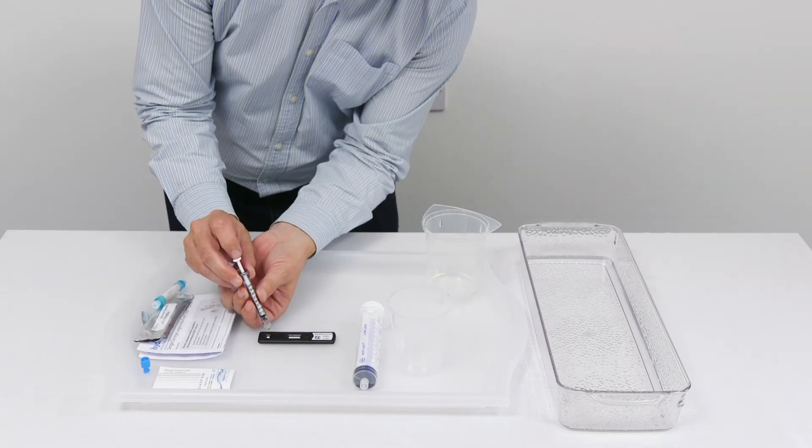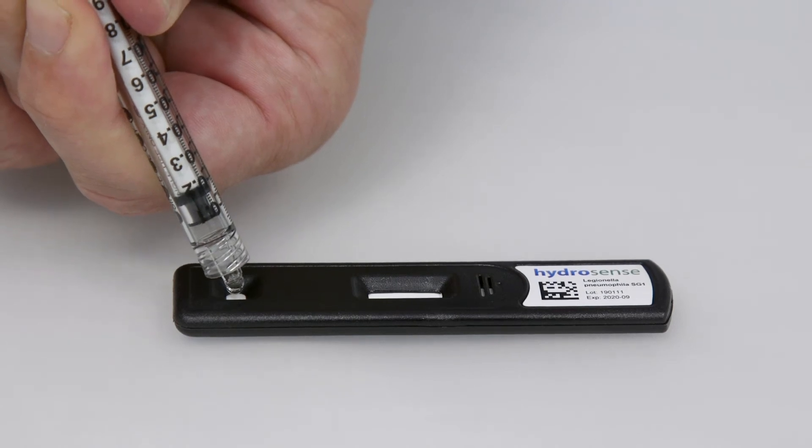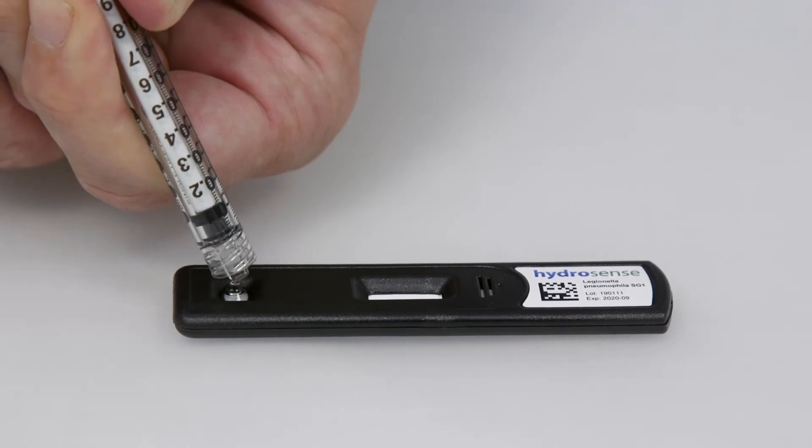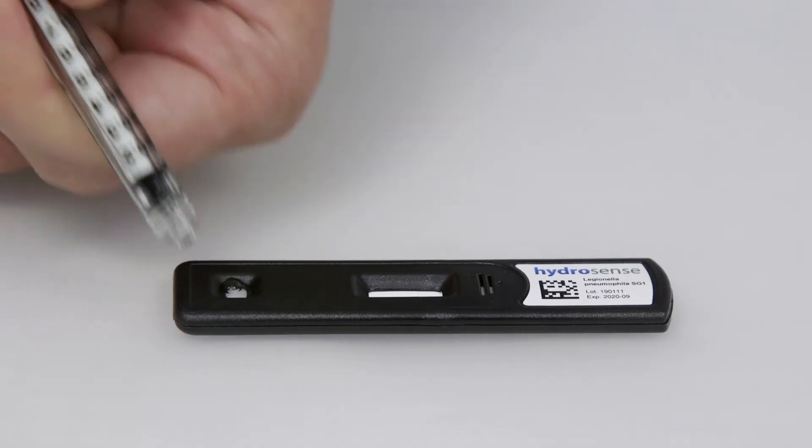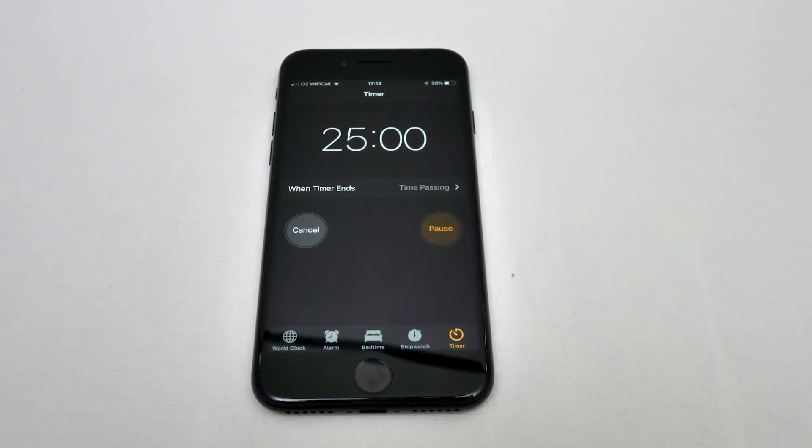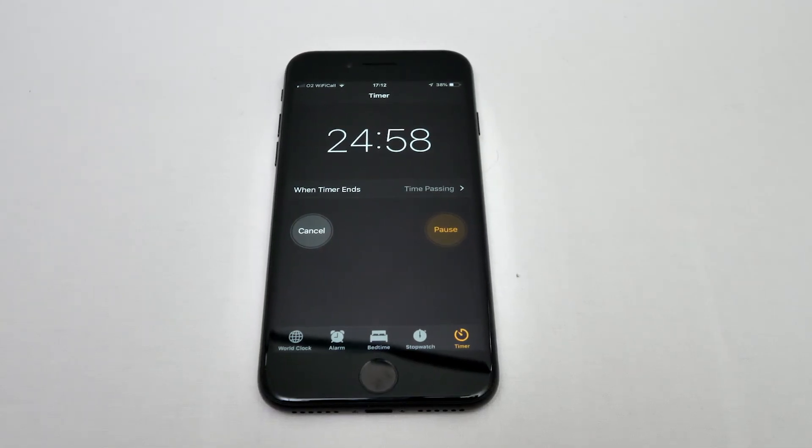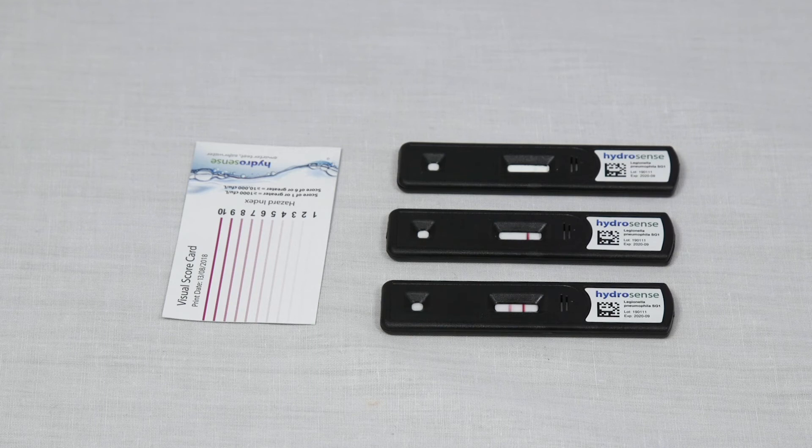Then in an upright position, depress the plunger onto the sample port of the test, dispelling all of the sample. At this point we would start a timer for 25 minutes and then read the test after 25 minutes and no longer than 30 minutes. If the test is read before 25 minutes or after 30 minutes, then you may get inaccurate results.